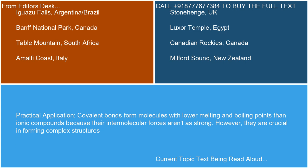Practical application: Covalent bonds form molecules with lower melting and boiling points than ionic compounds because their intermolecular forces aren't as strong. However, they are crucial in forming complex structures.